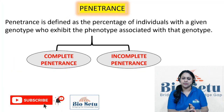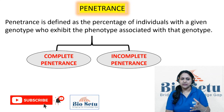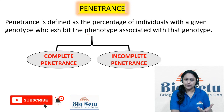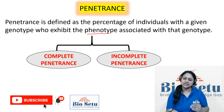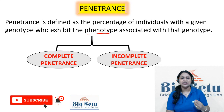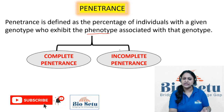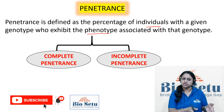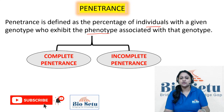So we will talk about penetrance — what is penetrance. Penetrance means the percentage of individuals with a given genotype who are exhibiting the phenotype. That means the genotype is expressed as a phenotype. So if 100 individuals have some genotype and they are also expressing that particular phenotypic expression, that genotype or trait was penetrable. Penetrance is defined as the percentage of individuals with a given genotype who are also exhibiting the same phenotype associated with that genotype.